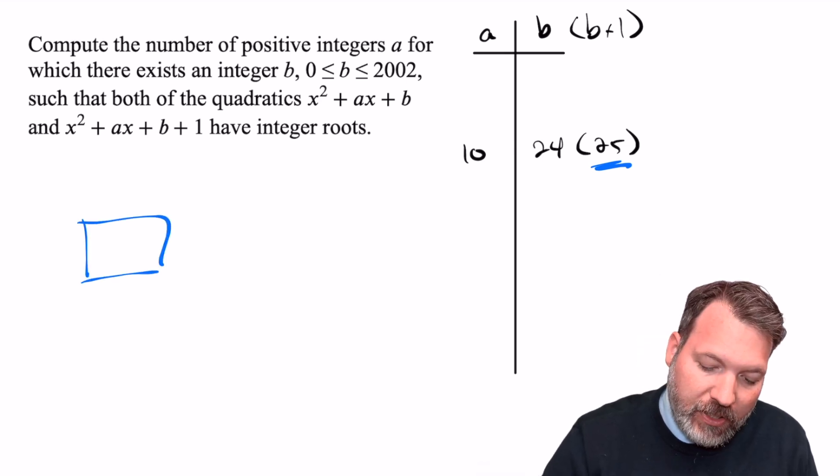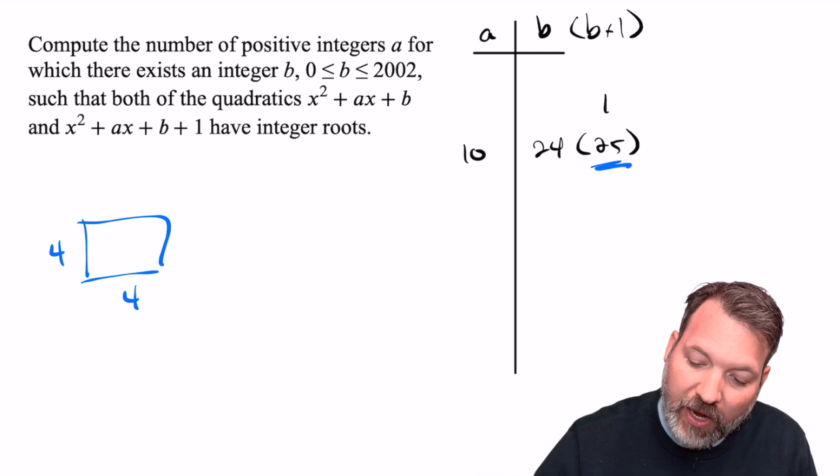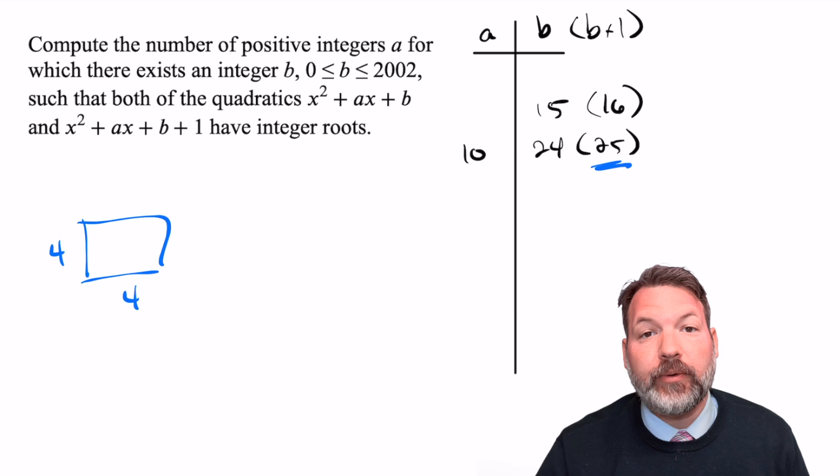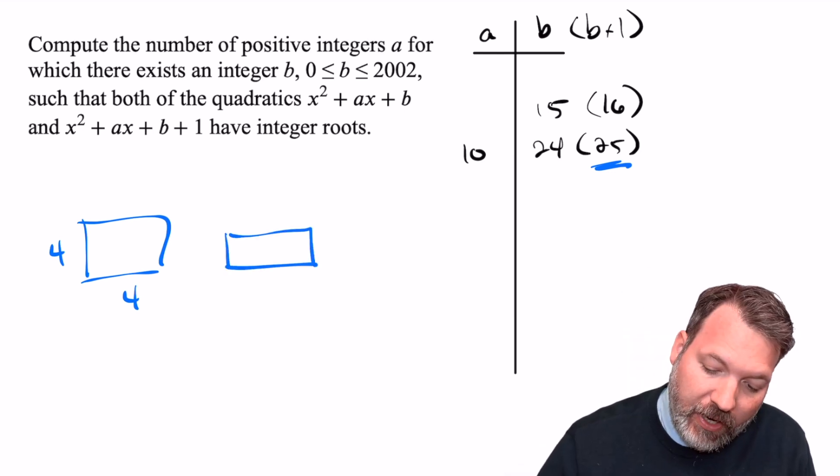For example, you could just as easily imagine starting with a four by four square instead, which would have an area of 16. In our situation, that would mean the B that we're targeting is 15.